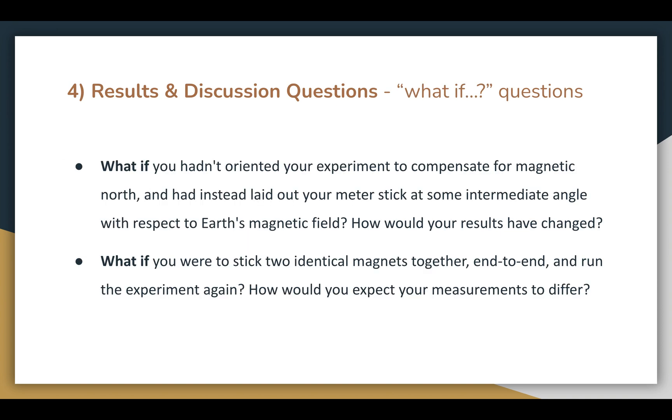And finally, to answer the questions below, if we hadn't compensated for magnetic north and laid the meter stick at any intermediate angle, our results for Bx would have all been off by a specific amount due to interference by the Earth's magnetic field.